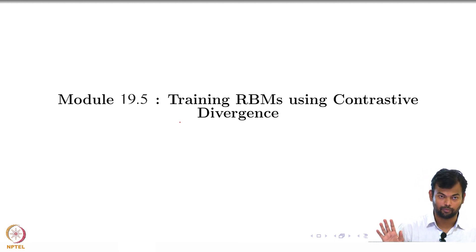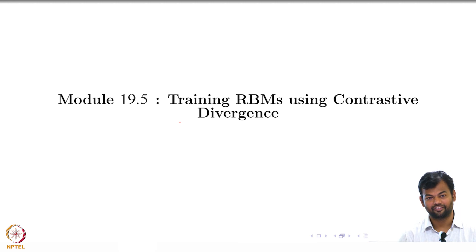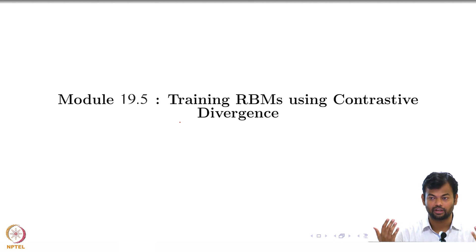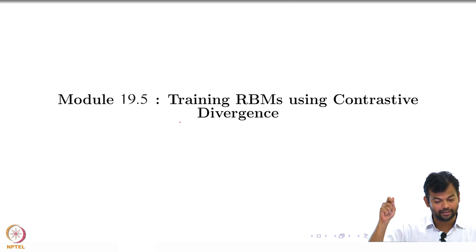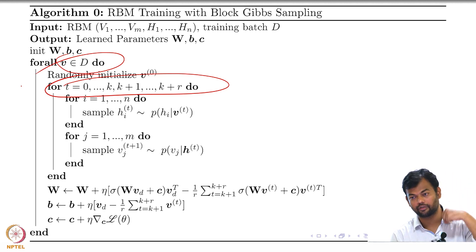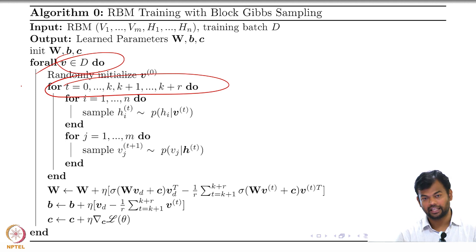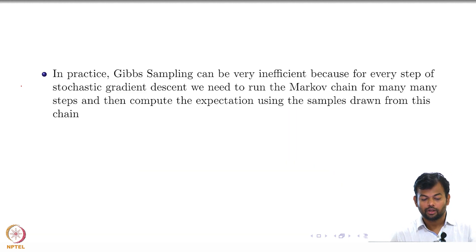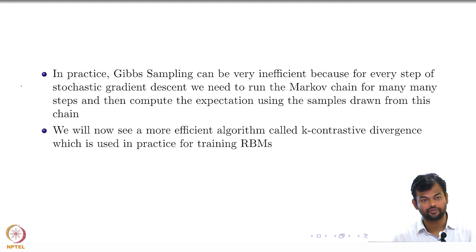Training RBMs with contrastive divergence. What is the problem with Gibbs sampling? We run the Markov chain for a large number of steps. In practice, that large number is really large, because the guarantees hold only asymptotically when n tends to infinity. For every training instance, you will have to run the Markov chain for that many time steps. That is obviously expensive. Each individual step is easy, but collectively you still have a large number of steps. At every iteration, you need to run the Markov chain for many, many time steps.